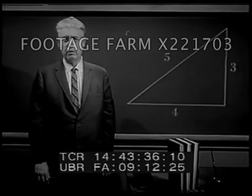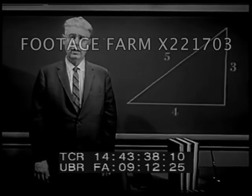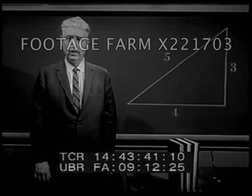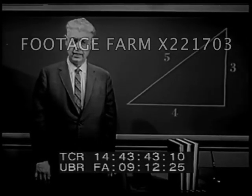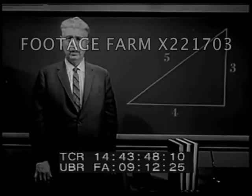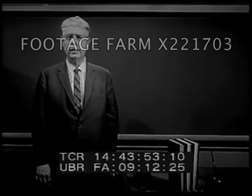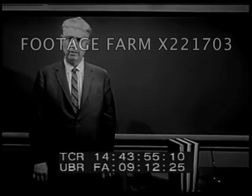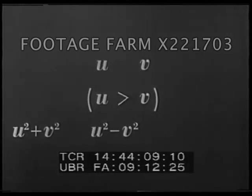Now, let's take that three-four-five triangle and raise a typical mathematical question. Can we find other sets of three integers that will yield right triangles? Yes, we can, and the pattern will deliver to us as many of them as we may desire. Here is the pattern: taking any two integers u and v, with u greater than v, such a set of numbers is u squared plus v squared, u squared minus v squared, and 2uv.